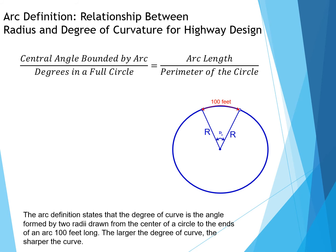Looking at this in an image, we have a circle with two radii drawn from the center. The angle that's formed between those radii is the degree of curvature, and the arc is 100 feet. It's an arc length along the arc of the circle connecting those two radial lines.